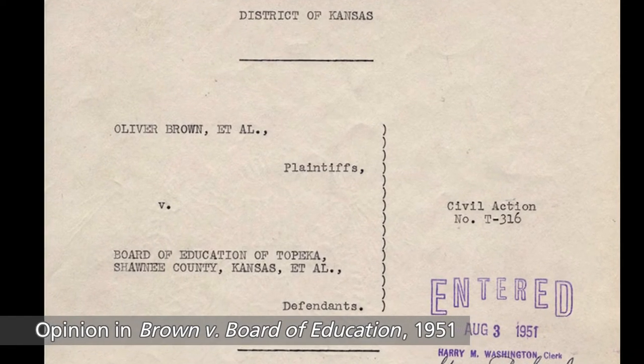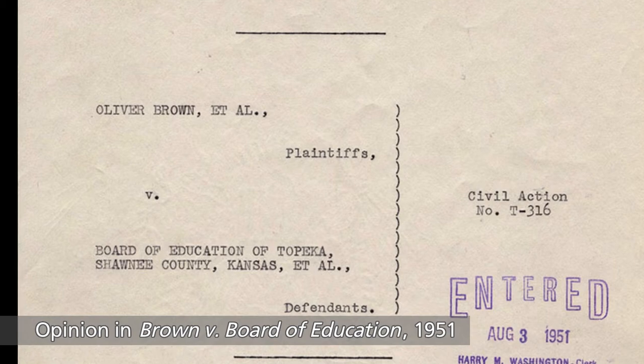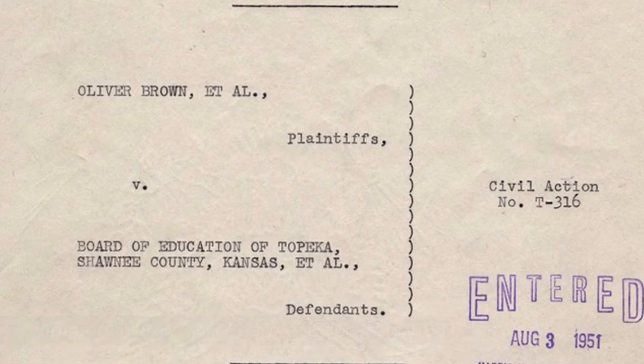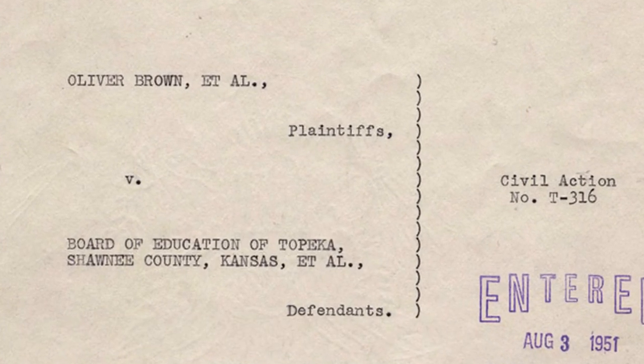The Brown v. Board of Education of Topeka, Kansas decision was passed on the 17th of May, 1954 in a unanimous vote, and it overturned segregation in public schools. Segregation was deemed problematic and harmful to children's development. The ruling was based on the Equal Protection Clause and the Reconstruction Amendments of nearly a century earlier.